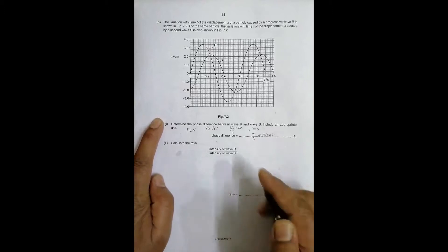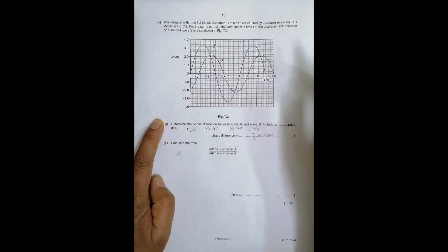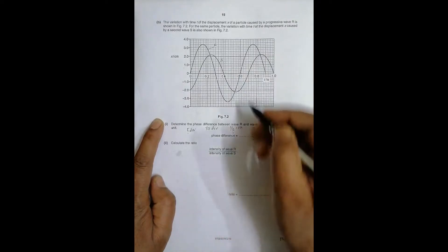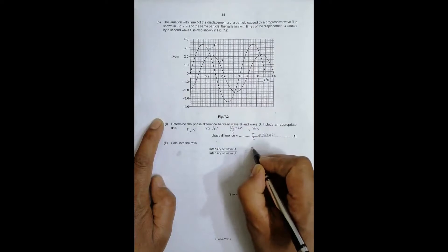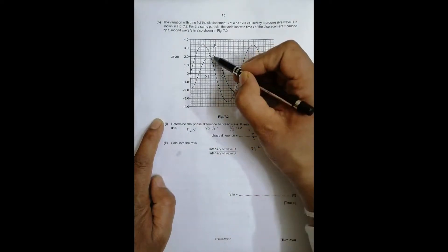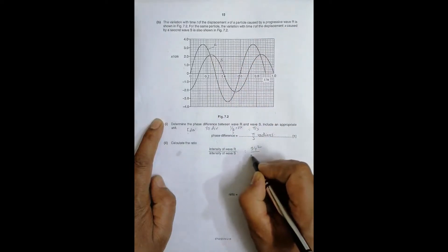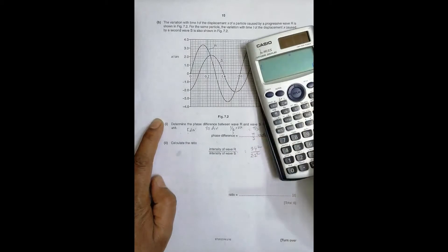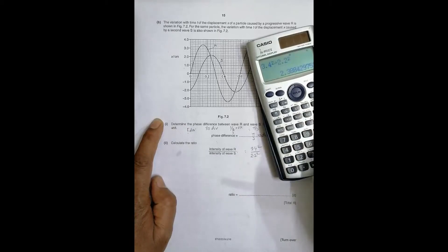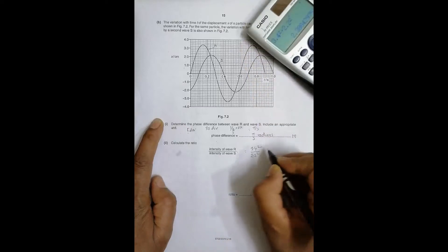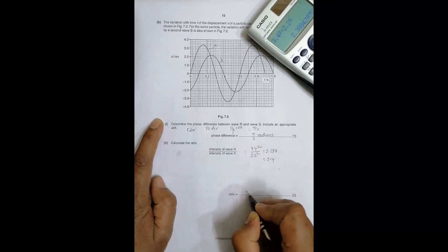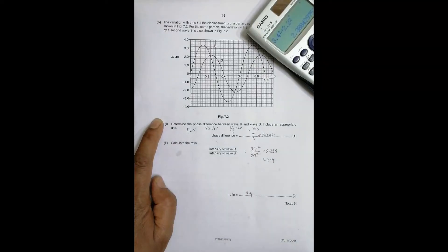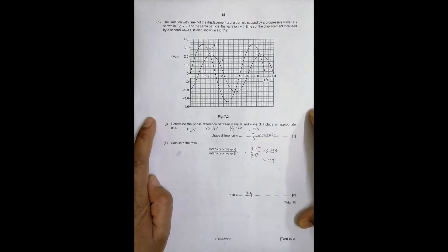Now next is calculate the ratio of intensity of wave R to intensity of wave S. This is equal to the amplitude of wave R squared to amplitude of wave S squared. This is 3.4, so it is 3.4 squared. This is 2, so one division should be 0.2, so it's equal to 2.2 squared. The value should be 3.4 squared divided by 2.2 squared, which equals 2.38, which is nearly equal to 2.4. So the ratio is equal to 2.4 or 2.4 to 1. That shows the complete work for this problem.